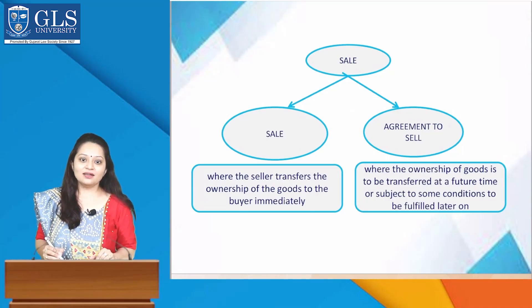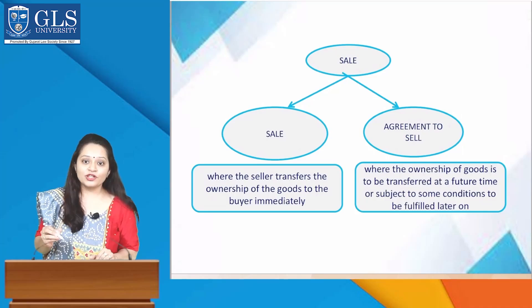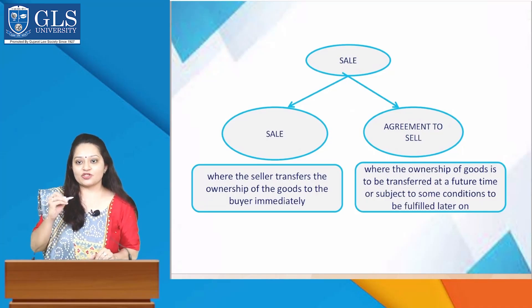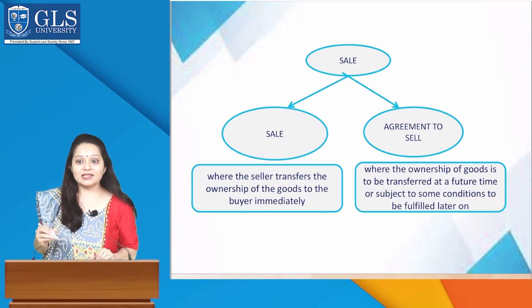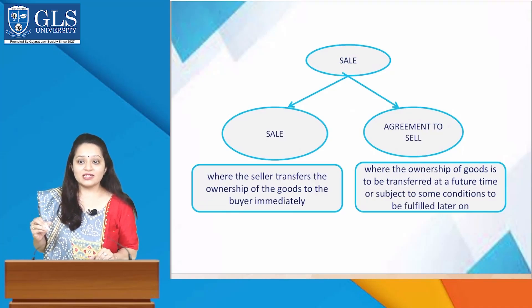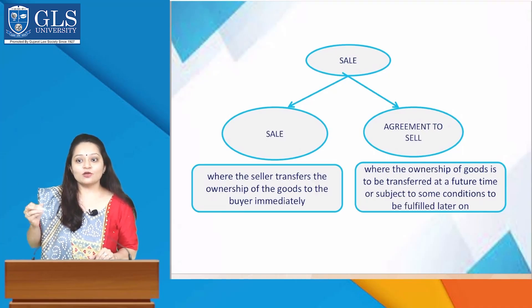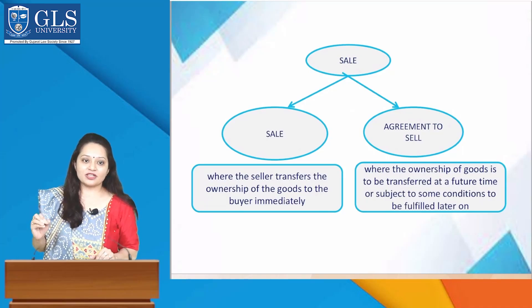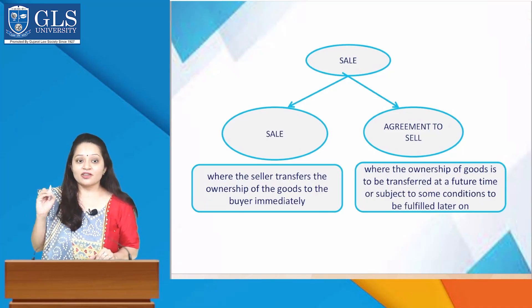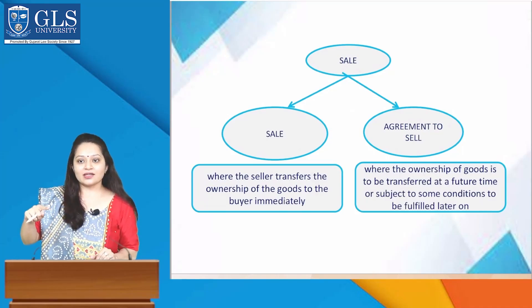What is sale? Sale is where the seller transfers the ownership of the goods to the buyer immediately. And what is agreement to sale? It is where the ownership of goods is to be transferred at a future date or subject to some conditions to be fulfilled later on. So when we say 'sale', it includes both present — that is sale — and future — that is agreement to sale.